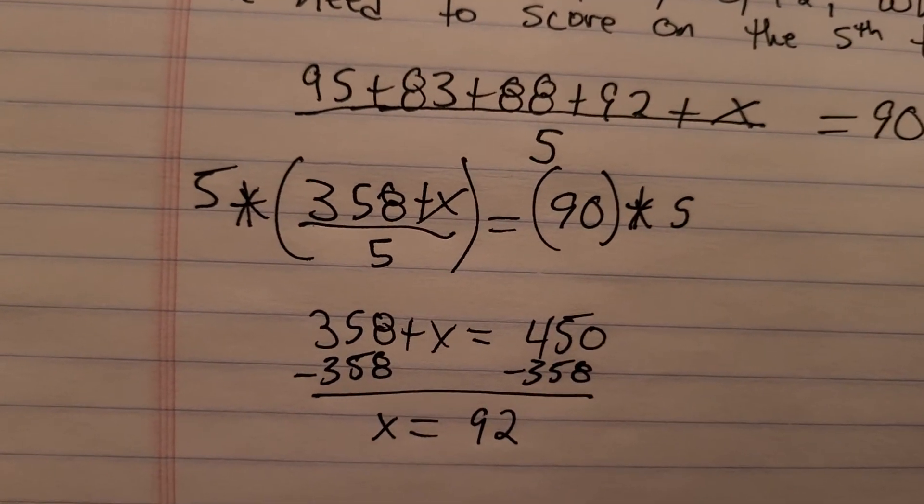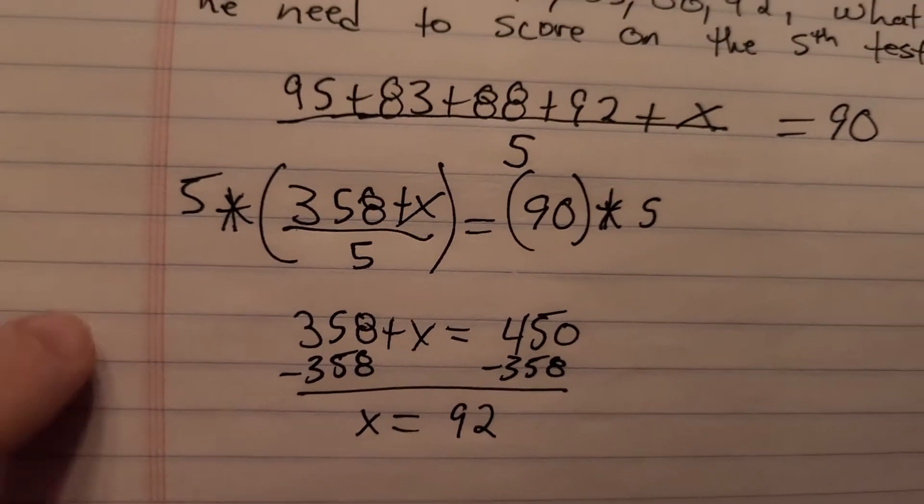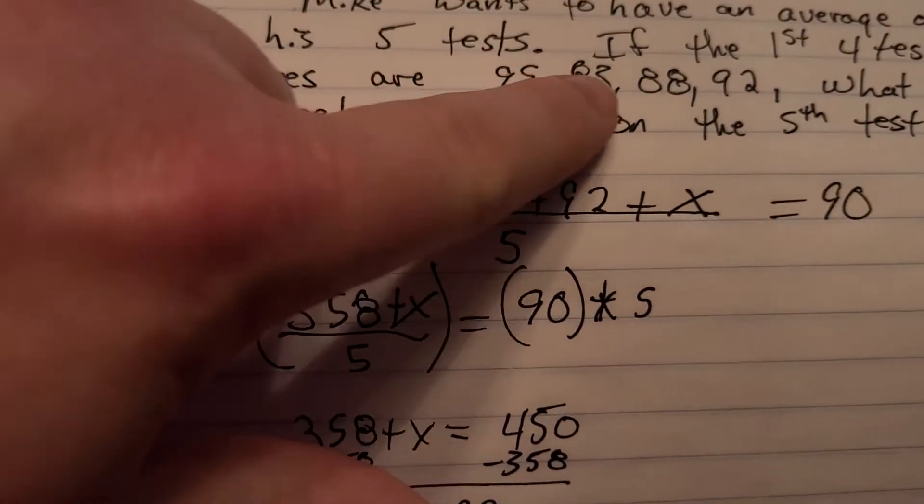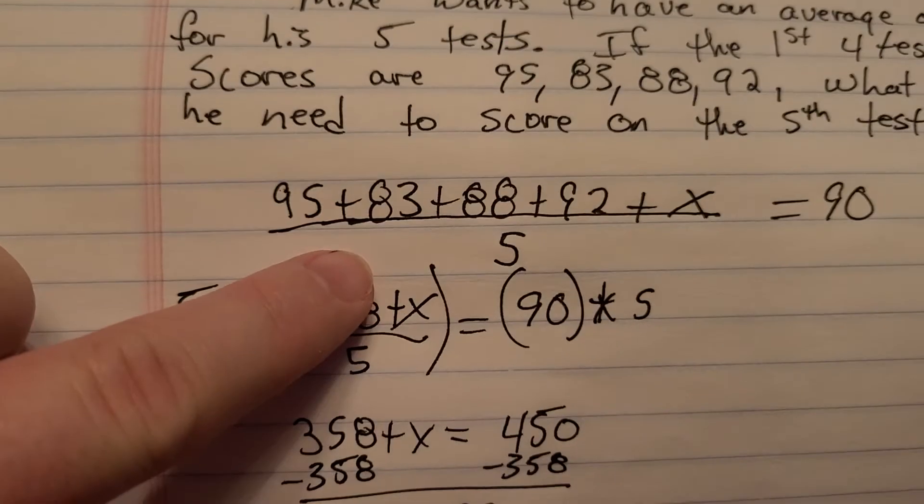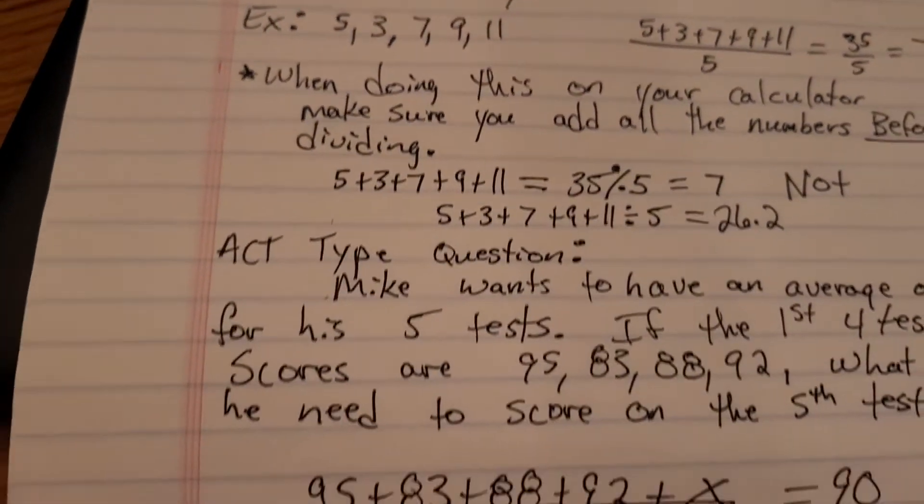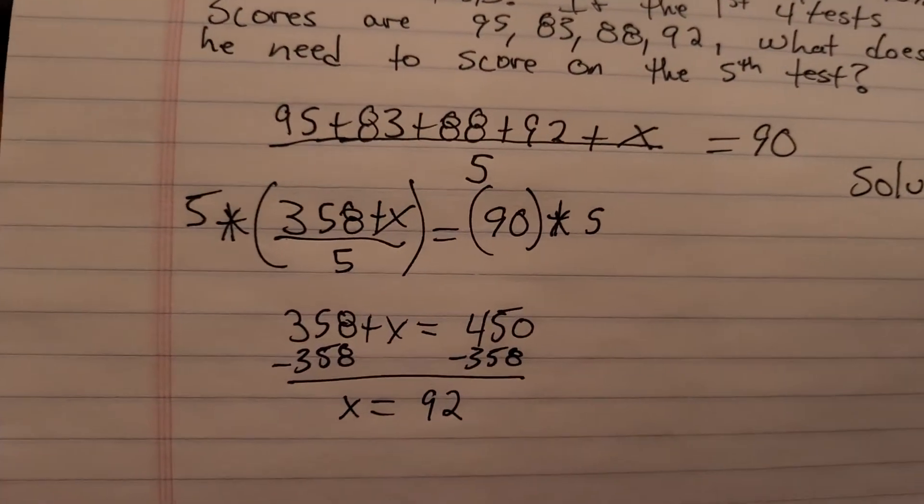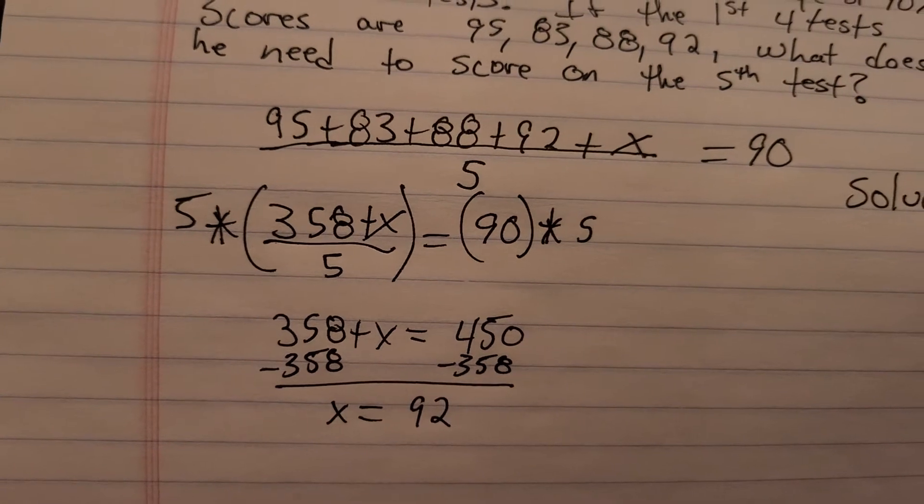One thing you can do because the ACT is multiple choice is you could take the numbers that they give you and substitute those in for x and do that same division like you had done for this first problem. That might be an easier route if you're not 100% sure on how to go about setting this up.